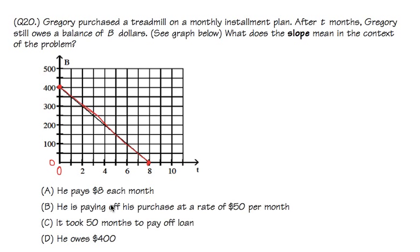If you want to figure out the slope from the graph, you just have to count. You go down from 400 to 0, this is technically negative 400. And then from 0 to 8, this is just 8.